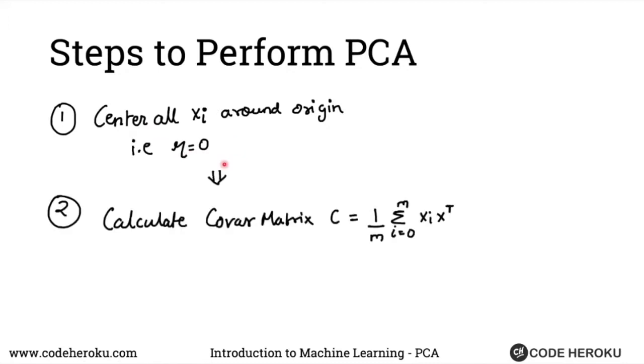Second step to do PCA, as we saw, we will calculate the covariance matrix. This covariance matrix is nothing but you take Xi and multiply it by the transpose of Xi. You average it for all, divided by the number of points that you have. That will give you the covariance matrix.